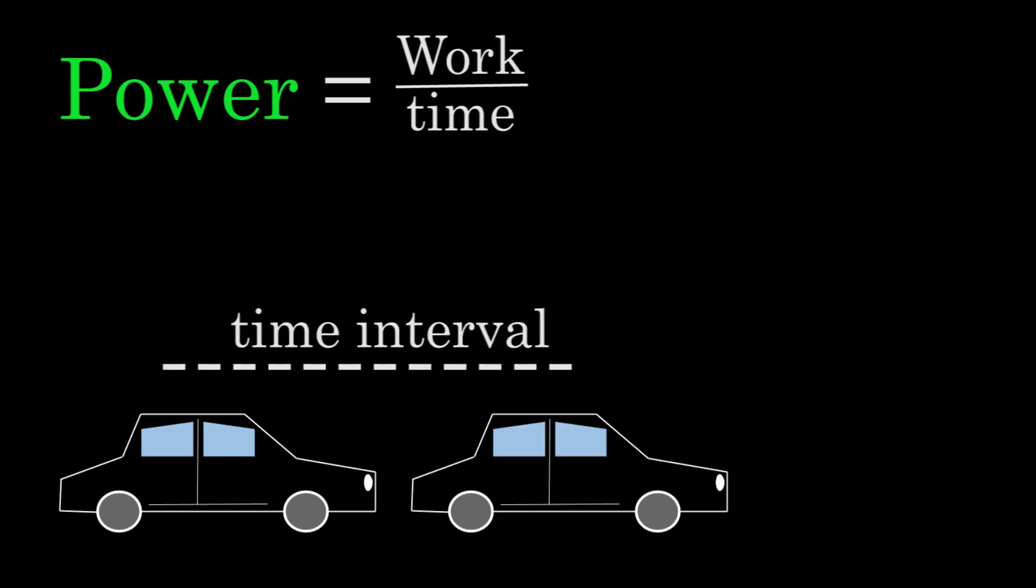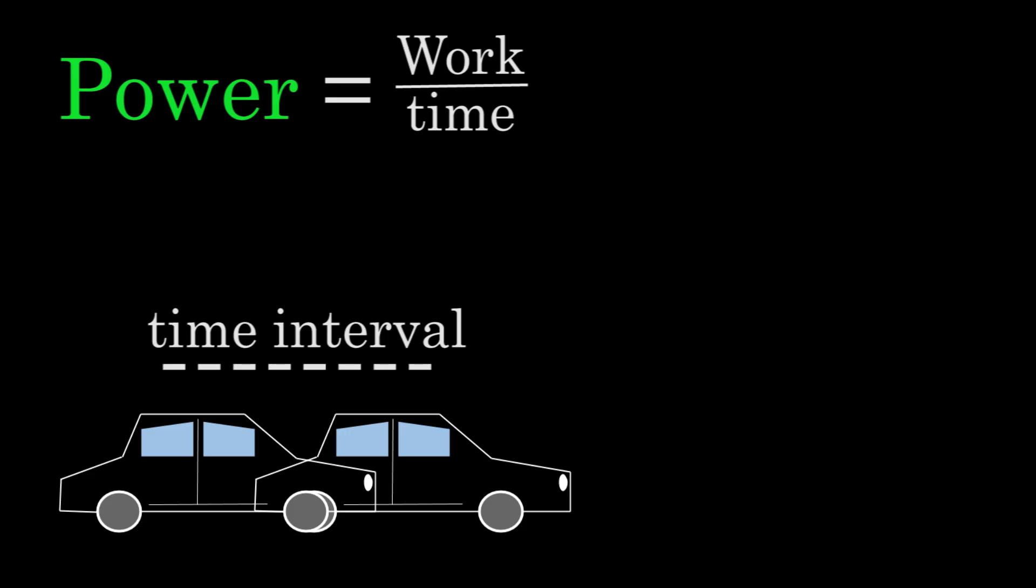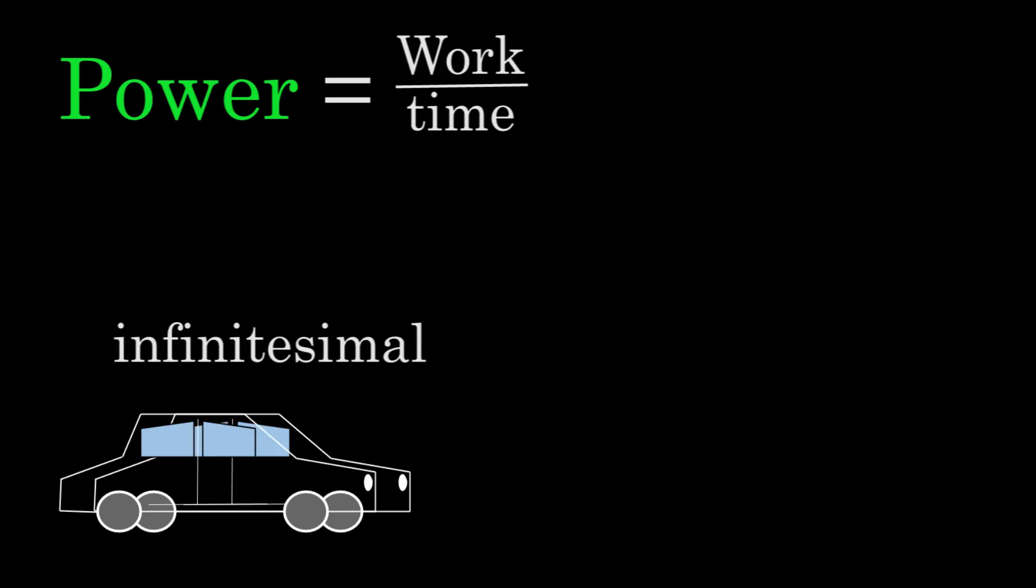If we were to look at time intervals that got smaller and smaller, we'd be getting closer and closer to the power output at a given moment. And if we were to make our time interval infinitesimally small, we'd be finding the power output at that particular point in time. We call this the instantaneous power. Dealing with infinitesimals typically requires the use of calculus. But there are ways of finding the instantaneous power without having to use calculus.